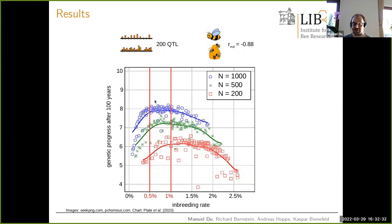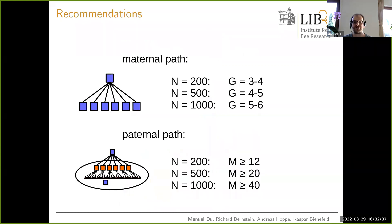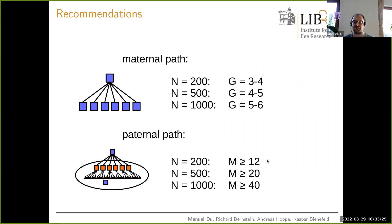With this data, general recommendations for breeders were developed. On the maternal path, depending on population size, sister group sizes of three to four are recommended for very small populations, rising to five to six for populations of 1000 queens per year, with larger populations likely supporting even bigger sister group sizes. On the paternal path, it is basically impossible to have too many mating stations, but minimum numbers are recommended: 12 mating stations for the smallest populations, with more required as population size increases.